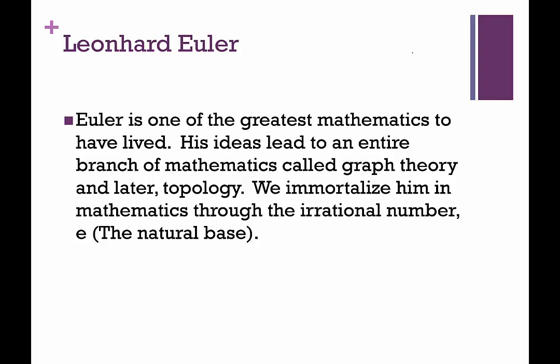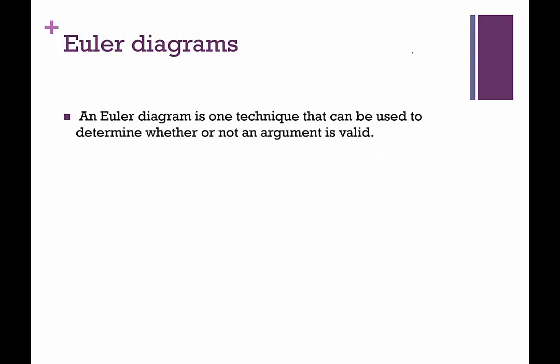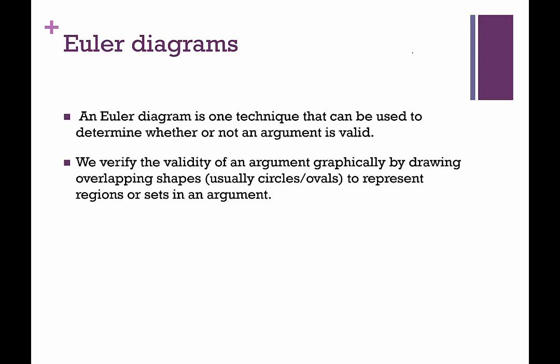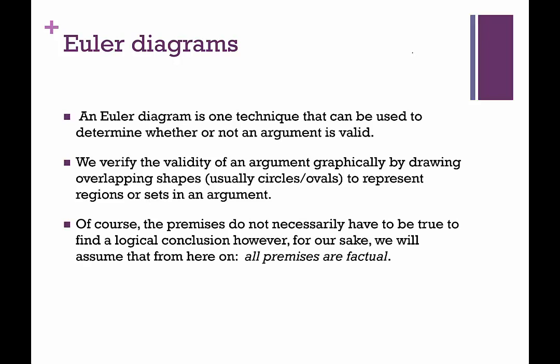Okay, let's talk about what Euler diagrams are. Knowing who he is doesn't actually help us with the Euler diagrams. So what are Euler diagrams? It's a technique that can be used to determine whether an argument is valid or not. We verify the validity of an argument graphically by drawing overlapping shapes. Usually we use circles or ovals, this might kind of sound like Venn diagrams, that's pretty much what it is. And they represent the regions or sets in the argument. Of course, the premises do not necessarily have to be true to find a logical conclusion. However, for our sake, we will assume that from here on, all the premises are factual. So whether they are or not, we're just going to pretend like they are or we're just not going to care whether they're factual or not.